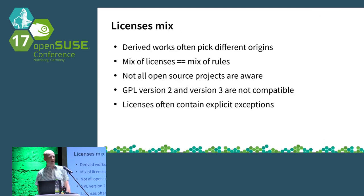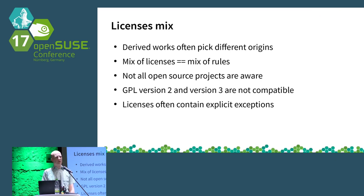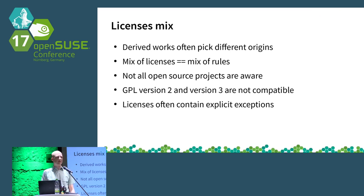One of the big problems we have as a distribution is that we are not distributing source — we are actually distributing a distribution which contains big mixes of derived works from open source. For example, you will find the same implementation of an MD5 checksum in many, many packages, and the original author's license derives into each package using it. The licenses that come with these sources are actually mixed within this binary within our distribution, and this mixing of licenses also means mixing of rules, which creates basically a new license with a new set of rules. Not all open source projects are aware that you can't blindly mix open source licenses — some you can, some you can't, but not everyone knows.